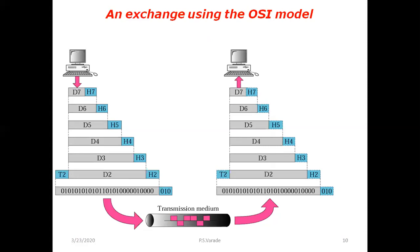The data link layer adds H2 and T2 — header and trailer. Similarly, the network layer D3 adds its header H3, and the transport layer adds H4. The transport layer may do fragmentation, add sender and destination addresses, and a CRC check — all of that goes into H4. Every layer appends extra information to facilitate transmission.